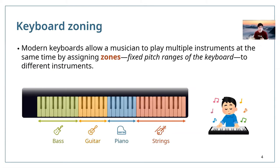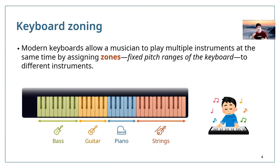Our project is motivated by a common functionality on modern keyboards called zoning. Keyboards today usually allow a musician to play multiple instruments at the same time. Before the performance, the musician has to pre-define some zones — the pitch range on the keyboard — and they assign different pitch ranges to different instruments. Once configured, the notes played in each zone will be automatically assigned to the corresponding instrument.